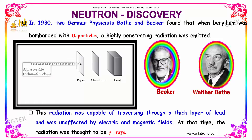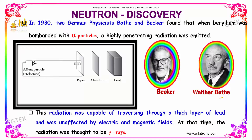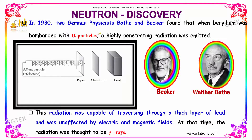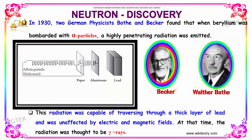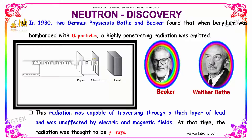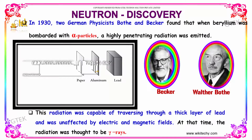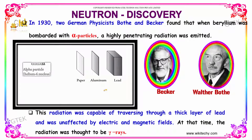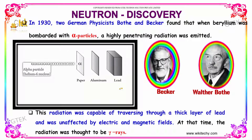Neutron and its discovery. In 1930, two German physicists, Bothe and Becker, found that when beryllium was bombarded with alpha particles, a highly penetrating radiation was emitted. This radiation was capable of traversing through a thick layer of lead and was unaffected by electric and magnetic fields. At the time, the radiation was thought to be gamma rays.